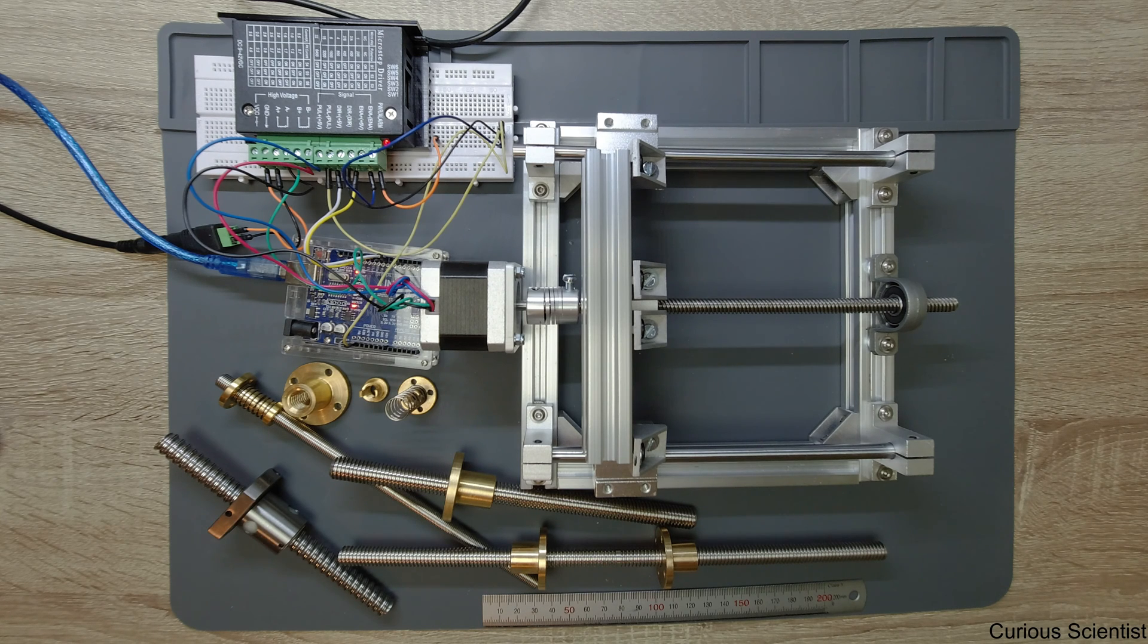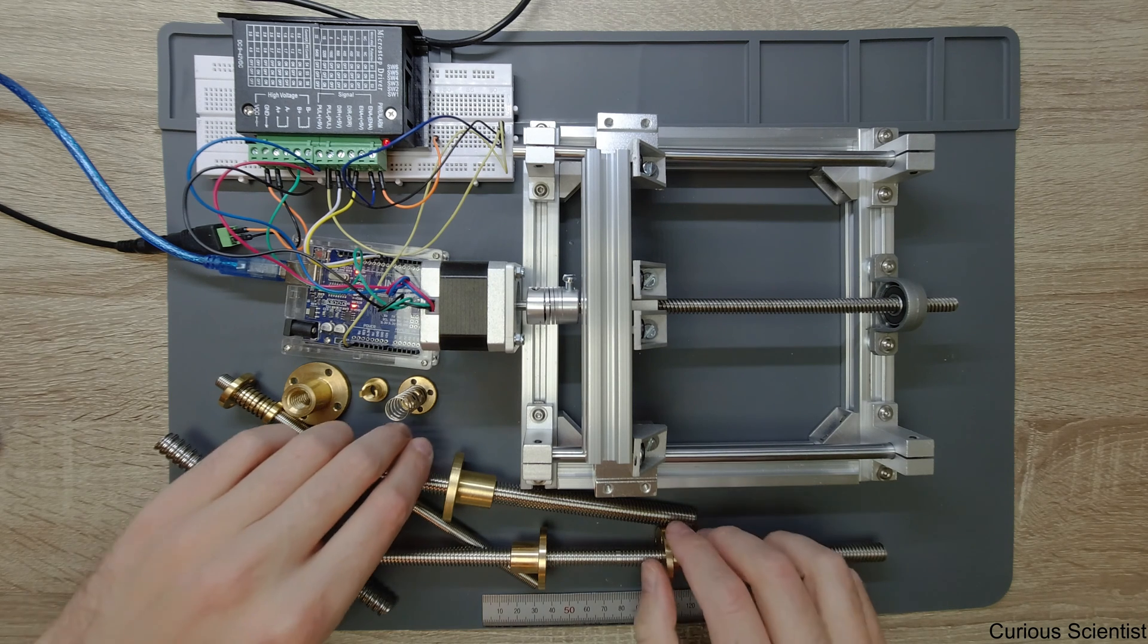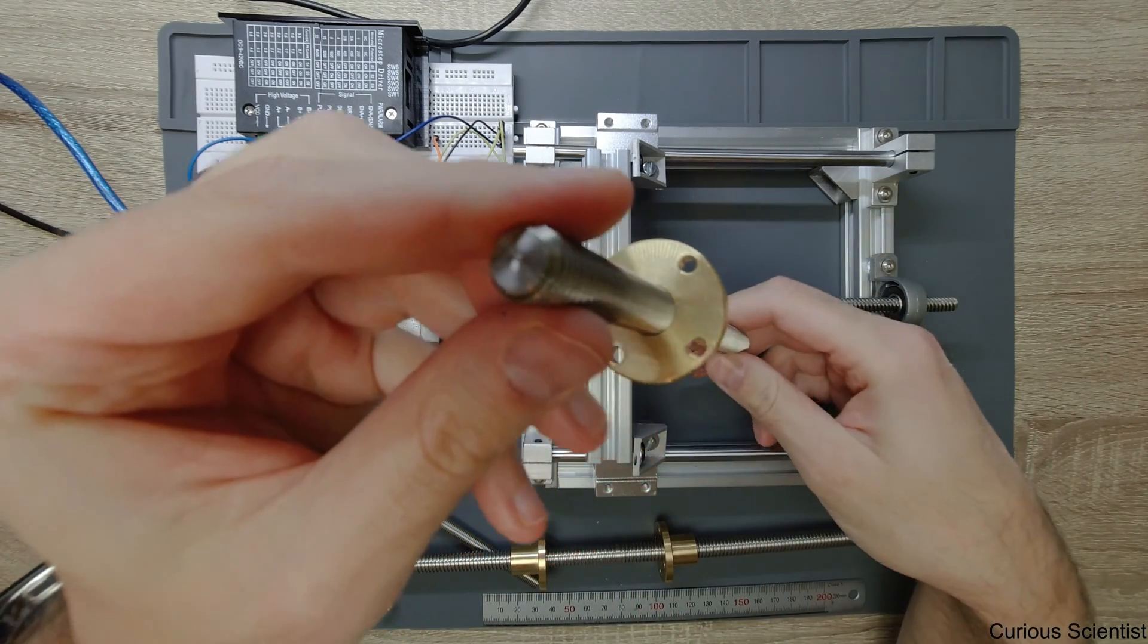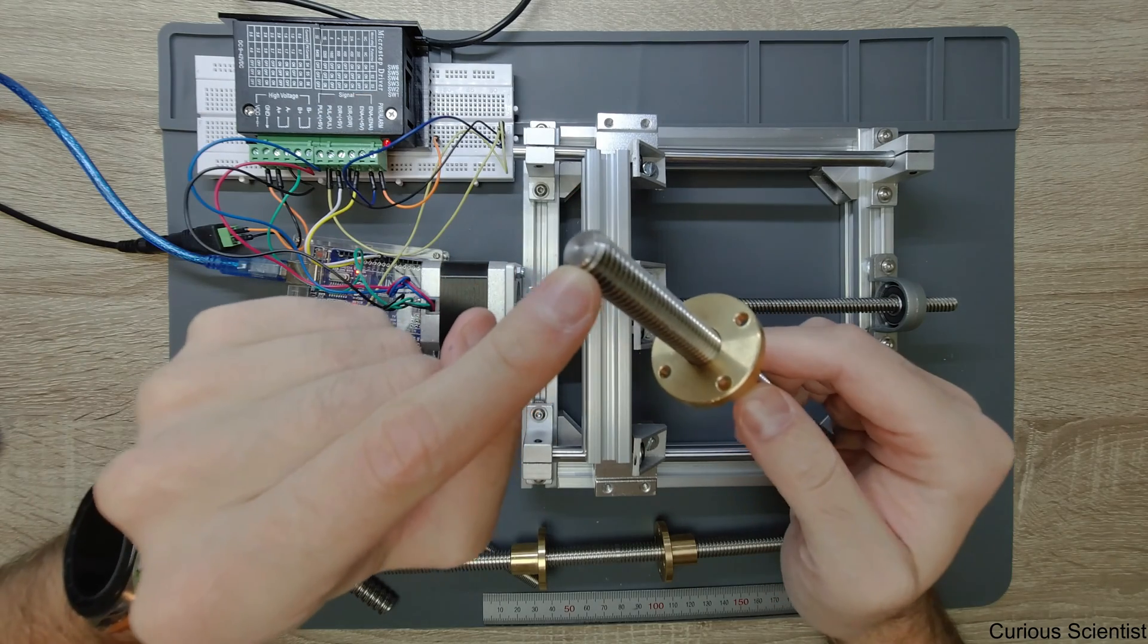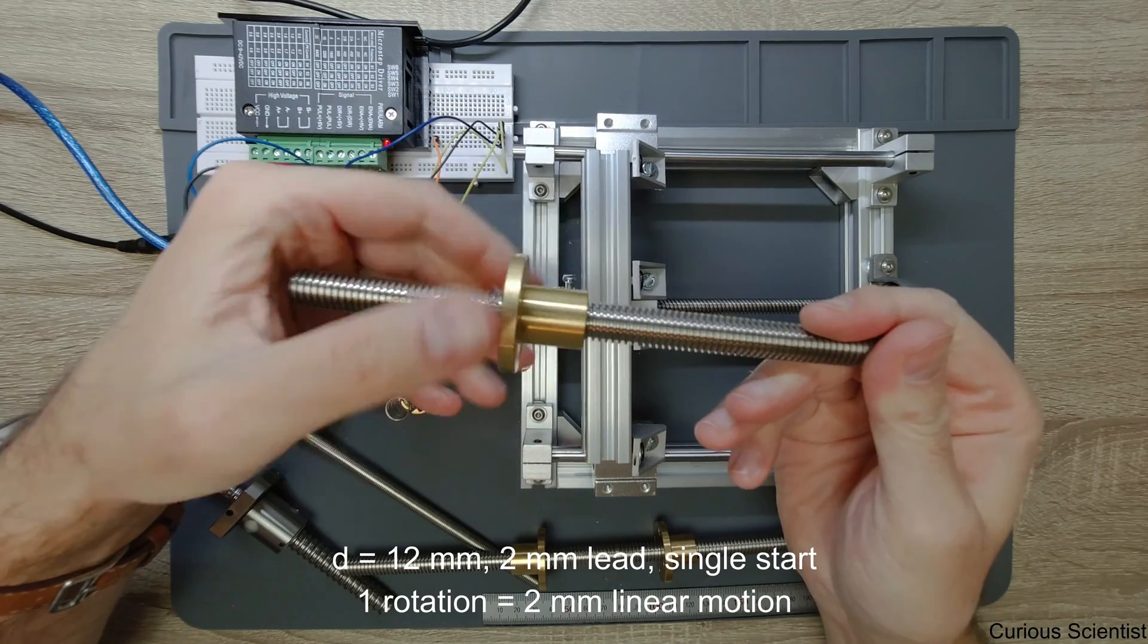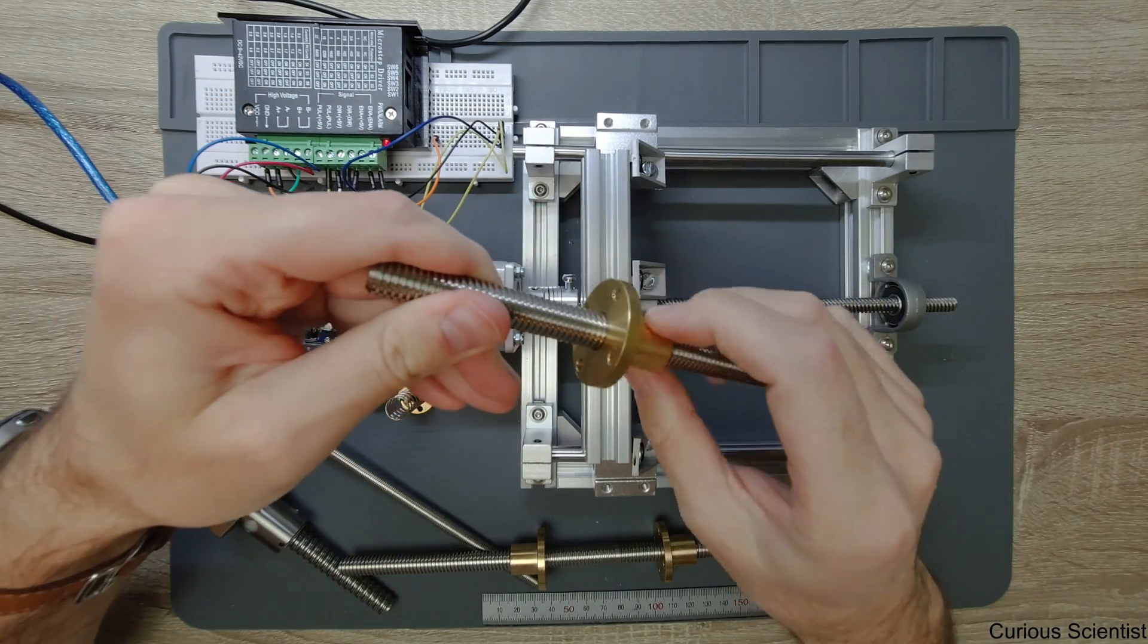There are four different lead screws here, or actually three different lead screws and one ball screw, but their roles are roughly the same. So let's talk a little bit about the lead screws. This big guy here is 12mm in diameter with a single start, and this is the nut made of brass.